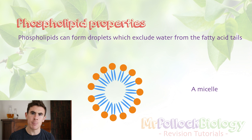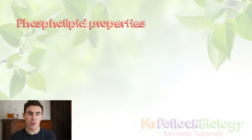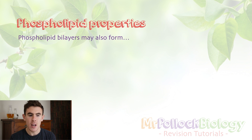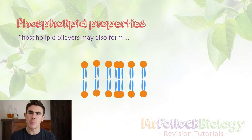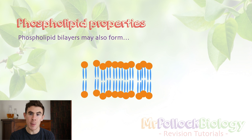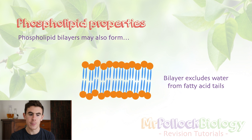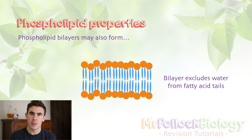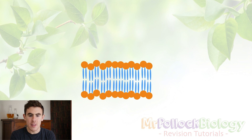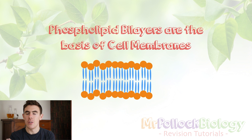Now if we add in more phospholipids, we start to see these other structures form that we call phospholipid bilayers, and these are absolutely essential in biology because they're going to be the basis of cell membranes that we'll look at in another video. The bilayer basically excludes water from the fatty acid tails and ensures that only the phosphate heads are in contact with water.